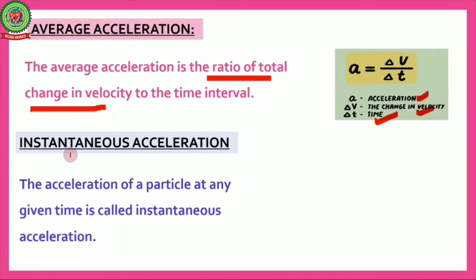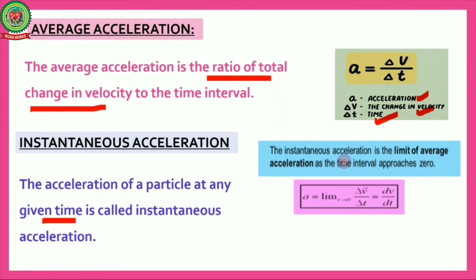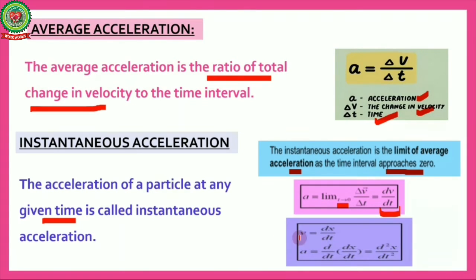One more term is instantaneous acceleration. As the word suggests, the acceleration of a particle at any given instant is called instantaneous acceleration. It is the limit of average acceleration as the time interval approaches zero. When Δt → 0, Δv/Δt is written in the form of differentiation of velocity, giving a = dv/dt.